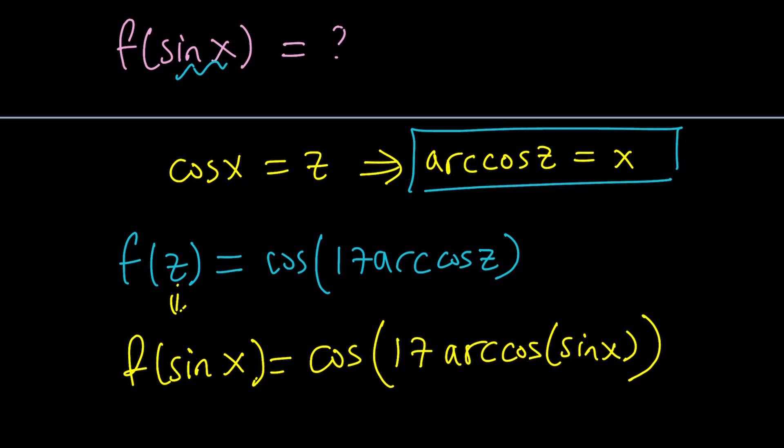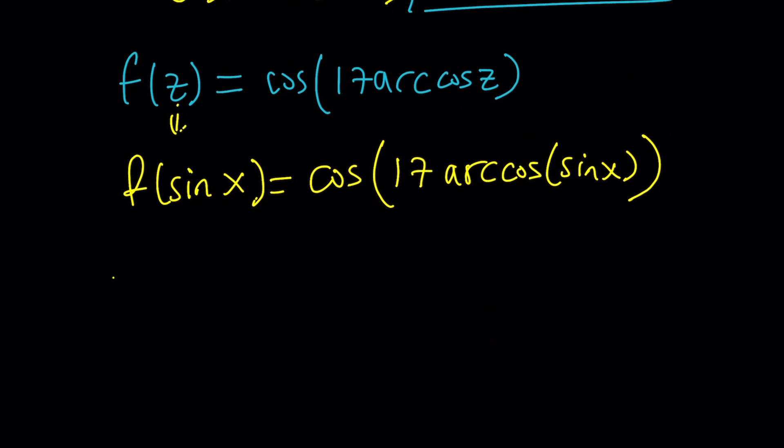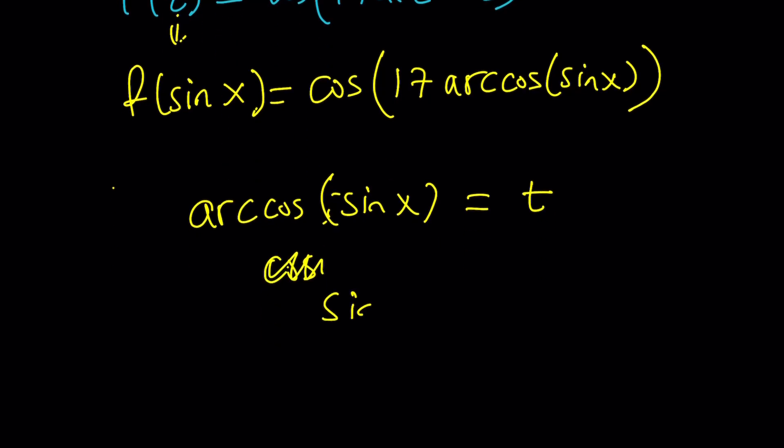Here's the million dollar question. What is arccos(sin x)? You can kind of think of it this way. arccos(sin x). You can actually set it equal to something like t. And then, cosine both sides. That should give you cosine. Because the arccos and cos are going to cancel out. But when you cosine both sides, you're going to get something like sin x = cos t.